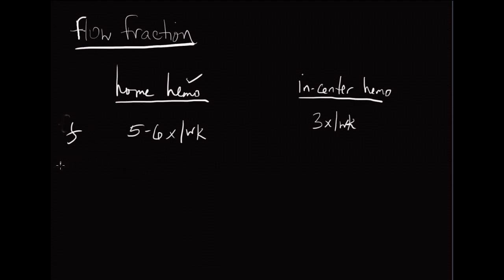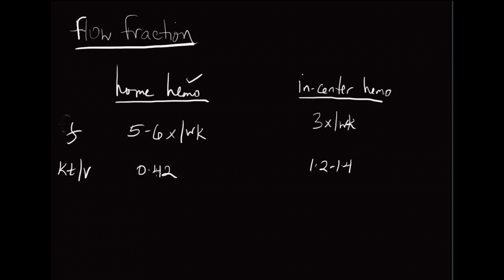The second difference is KT/V per treatment session. For in-center patients, based on the HEMO study, it's about 1.2 to 1.4. For home hemo patients, there aren't any studies good enough to tell us the optimal KT/V per session. We've extrapolated the optimal KT/V from the peritoneal dialysis world, so for now the per-session target is about 0.42. We can go into that further in the next lesson.